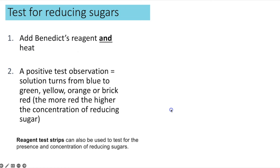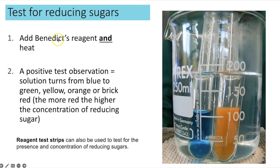To test for reducing sugars, add Benedict's reagent — which is blue — and heat. Mark schemes are very specific that you must state both 'add Benedict's reagent' and 'heat.' After heating, a positive result means the blue colour changes: the more red the colour, the higher the concentration of sugar present. You can also use reagent test strips to test for the presence and concentration of reducing sugars.